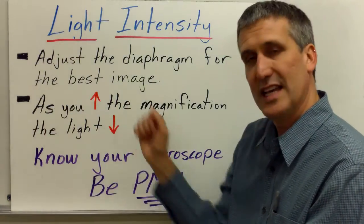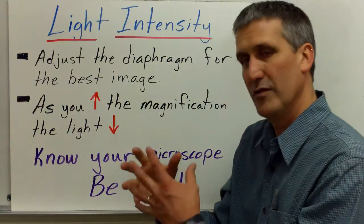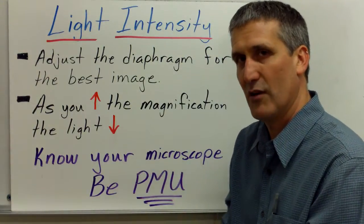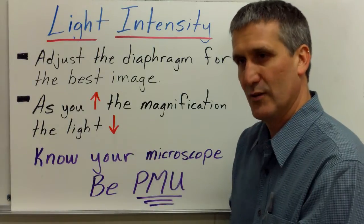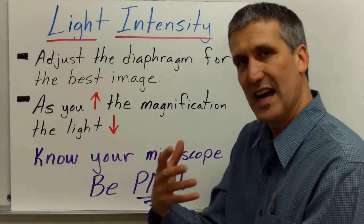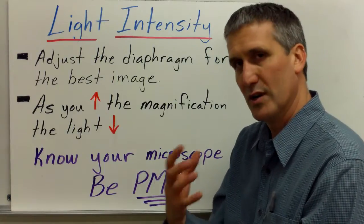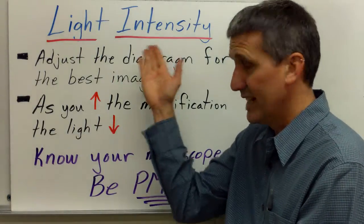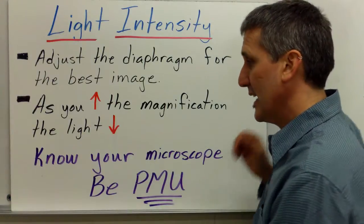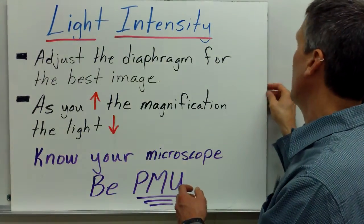The other reason is because as you increase the magnifying power from low to medium to high power objectives, the actual amount of light decreases. So, a lot of times you need to adjust the light intensity in the diaphragm in order to get the best image. So, you need to be aware of light intensity if you're going to be a professional microscope user.